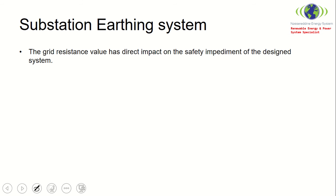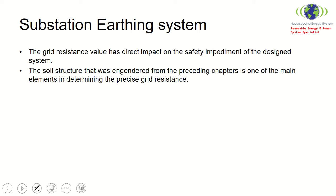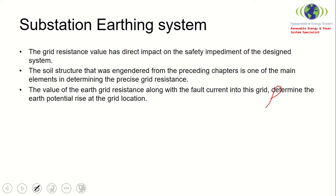The grid resistance value has a direct impact on the safety of the design system, as discussed in previous lectures. The soil structure — determined in the preceding chapters — is one of the main elements in determining the precise grid resistance. So now we go back to soil resistivity. The value of the earth grid resistance, along with the fault current into the grid, determines the Earth Potential Rise. The earth grid of an earthing system consists of several configurations.